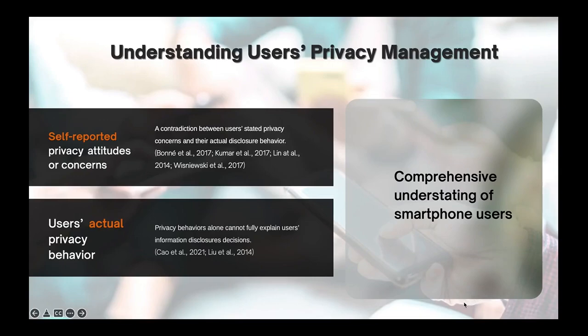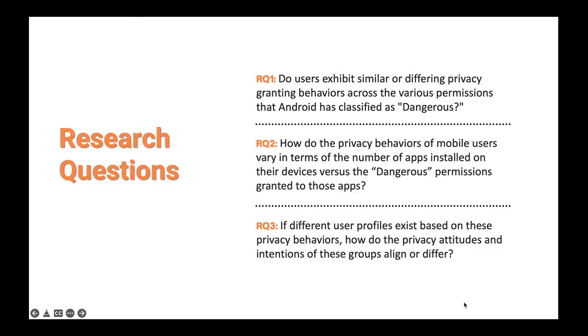We present an empirical approach to improve the understanding of privacy choices of mobile device users. In this study, we present these three research questions. The first question is about whether users exhibit similar or differing granting behaviors for dangerous permissions. The second question is how do users' privacy behaviors vary? While the third question is if there are privacy user profiles, how do the privacy attitudes and intentions for these groups align or differ?